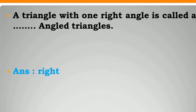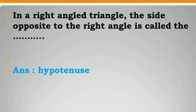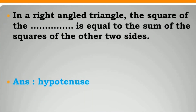A triangle with one right angle is called a right-angle triangle. In a right-angle triangle, the side opposite to the right angle is called the hypotenuse. The square of the hypotenuse is equal to the sum of the squares of the other two sides.